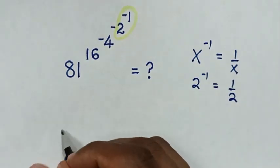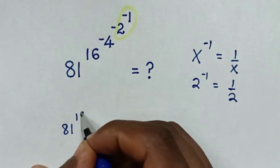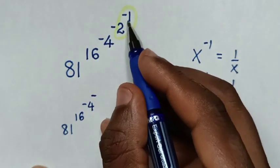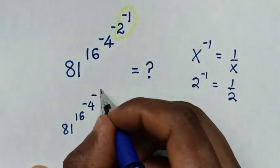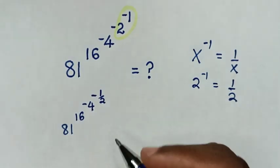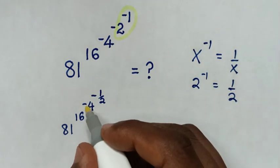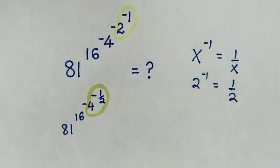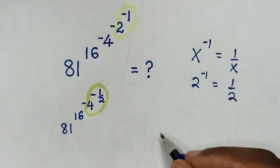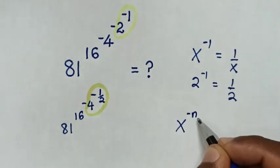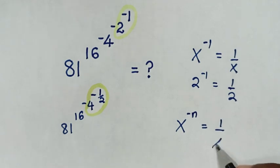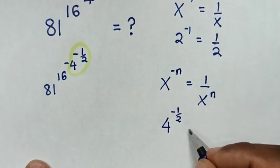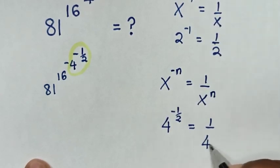Then from our problem, it will be 81 power of 16, power of negative 4, power of negative — then 2 power of negative 1 is a half, so power of negative a half. In the next step, we'll deal with 4 power of negative a half, leaving the negative behind. By applying the rule that x power of negative n is equal to 1 over x power of n. So from 4 power of negative a half, it will be equal to 1 over 4 power of a half.